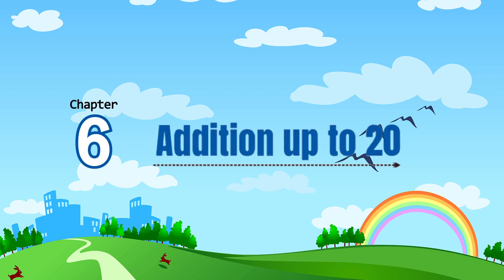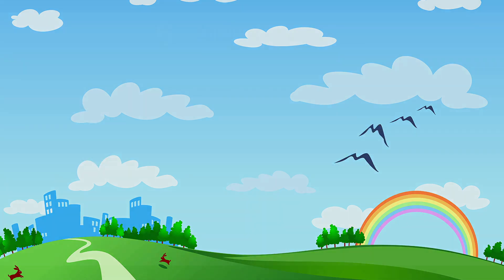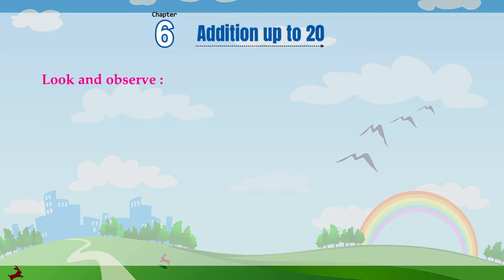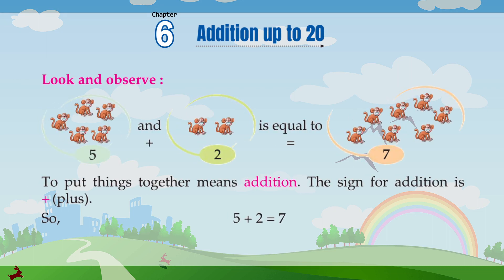Chapter 6: Addition up to 20. Look and observe. 5 plus 2 is equal to 7. To put things together means addition. The sign for addition is plus.